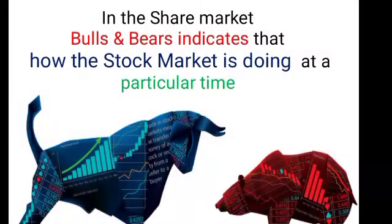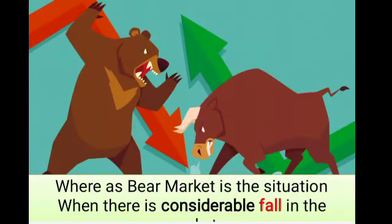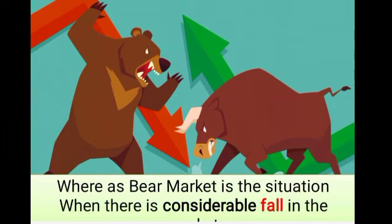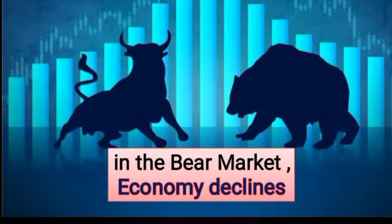In the share market, bulls and bears indicate how the stock market is doing at a particular time. Bull market refers to those markets which grow aggressively over a period of time, whereas bear market is the situation when there is considerable fall in the market. In the bull market, economy grows, whereas in the bear market, economy declines.